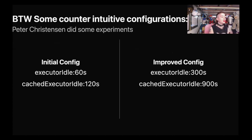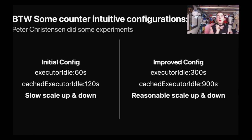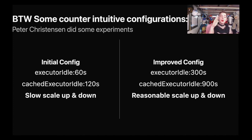One thing that was a little counterintuitive with configuration: we went from an initial setup of an executor idle time and a cache idle time of 120 seconds, then increased those idle times. We actually got better scale up and scale down with the higher idle times. This is because Spark doesn't do a perfect job of keeping track of whether an executor is likely to have a job scheduled on it. We'd get into situations where executors were flapping — coming up and going away very quickly — when we tried tighter timeouts. By relaxing these timeouts, we got a much more reasonable scale up and scale down experience.